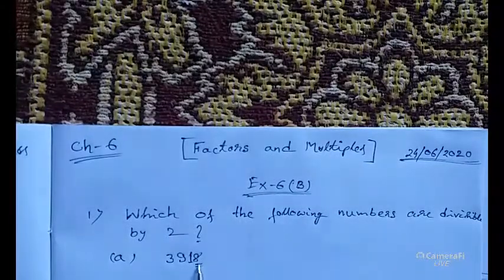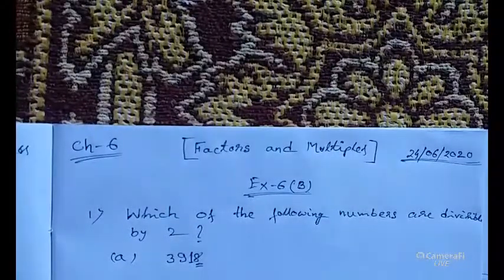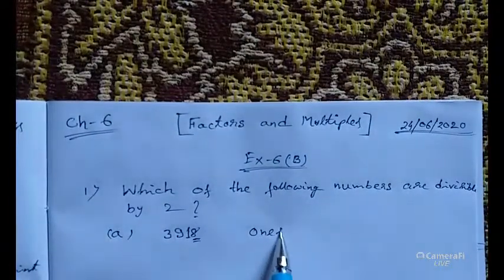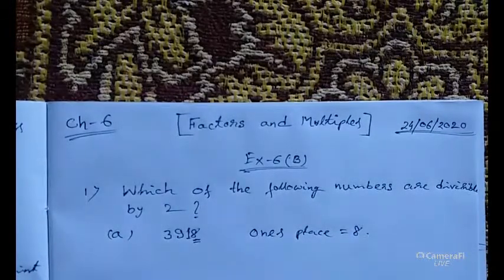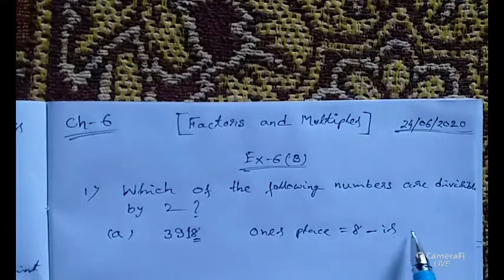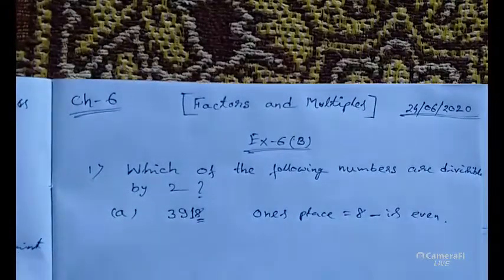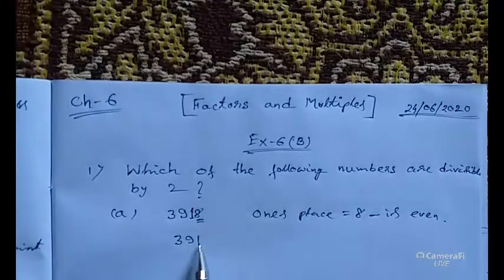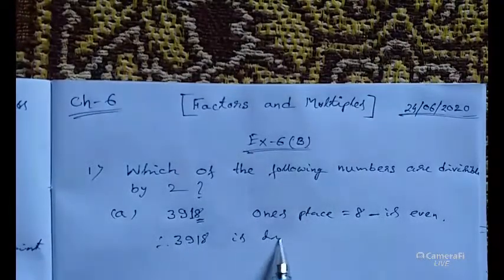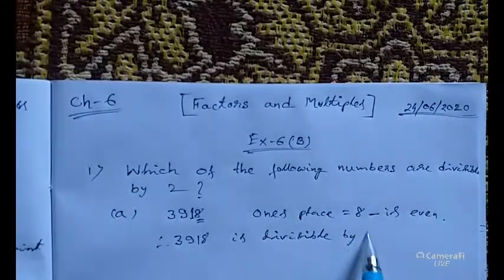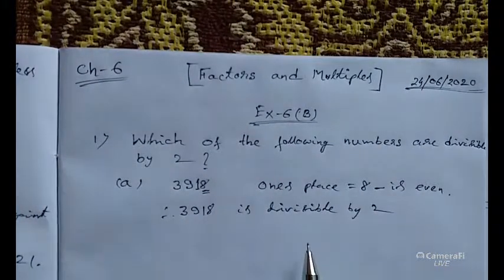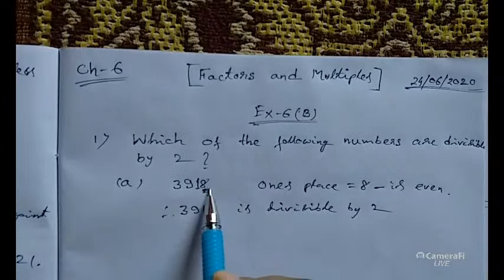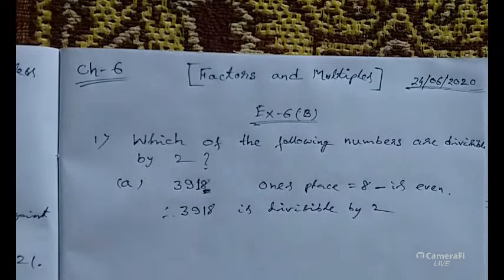Here we check the ones place digit, which is 8. And 8 is an even number. So 3918 is divisible by 2. This number is divisible by 2 because its ones place digit is 8, which is even.